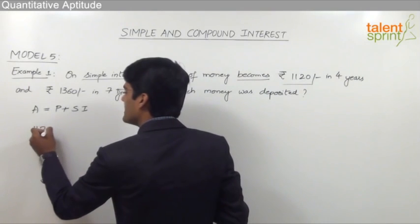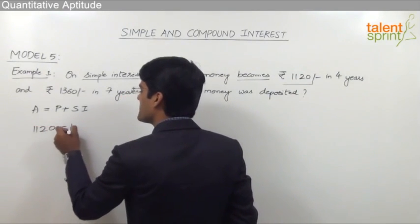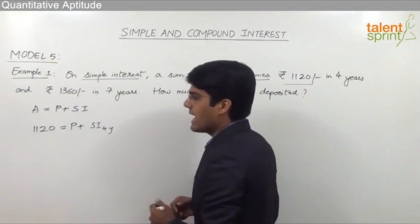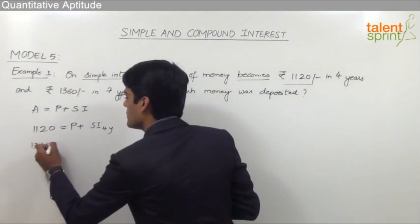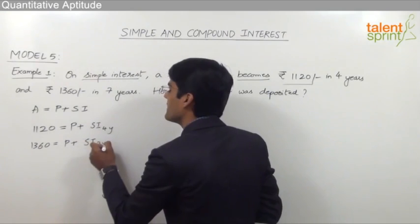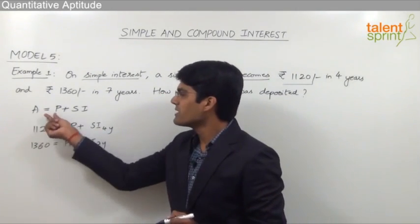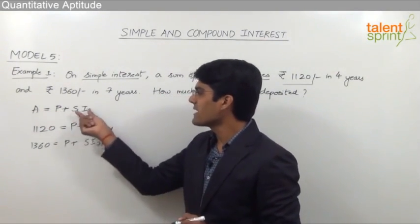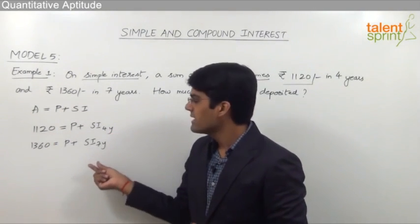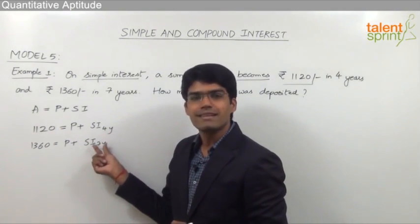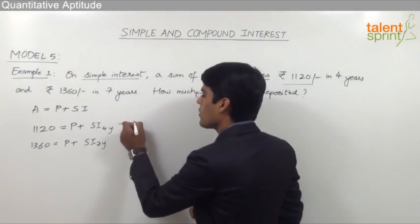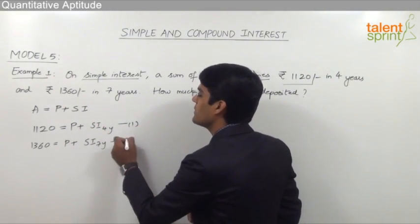So we can say that 1120 equals principal plus SI for 4 years, and 1360 equals principal plus SI for 7 years — because total amount is principal plus SI. This gives us equation number 1 and equation number 2.